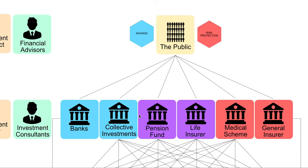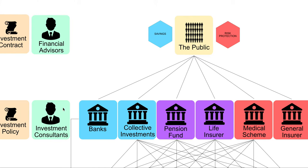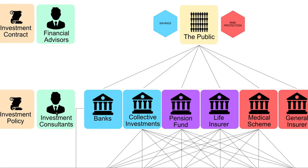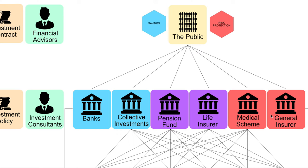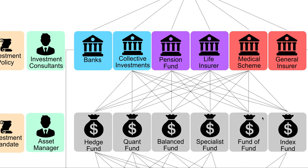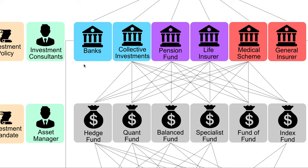Investment consultants — and this is where actuaries can play quite a big role — will come to these institutional investors and help explain where they should put their money. Essentially, they will give their money to certain funds, and funds are run by asset managers. Asset managers are people who have a CFA or a degree in finance. The most common funds are hedge funds, quant funds — which are based on statistical formulas to extract anomalies and get a little bit of extra alpha — balanced funds, specialist funds, funds of funds, and index funds.